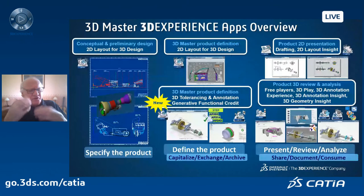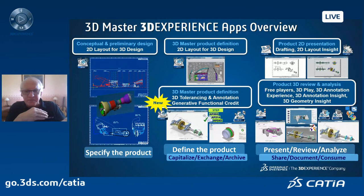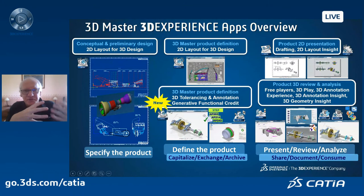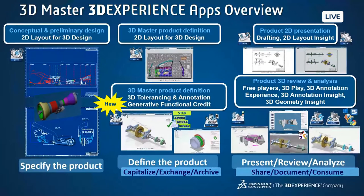We have a lot of applications in Katia — since many years in Katia V5 and 3D Experience Katia — to do conceptual and planning design, to do the 3D master project definition, to present and generate drawings or 2D information from the 3D master information, and to review and display with free players, online players, or on-premise players. Today I will focus on the authoring part — how you define 3D annotation and 3D dimension in the 3D model — and introduce something very new: this new generative tolerancing.